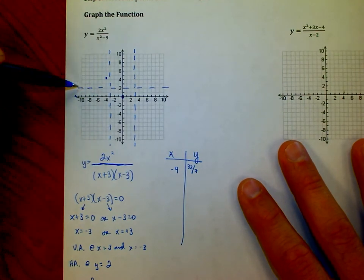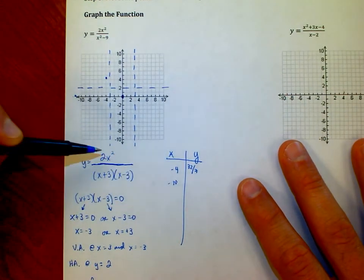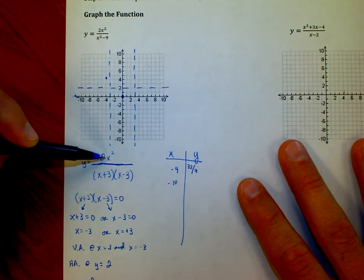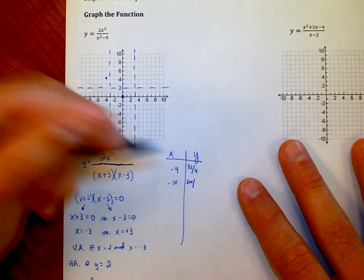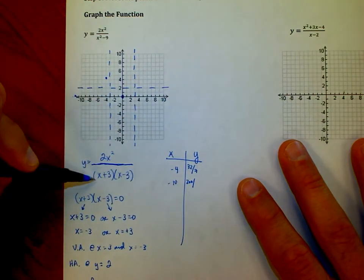If I put in negative 10, let's find out what that looks like. Negative 10 times x², that would be negative 10 times negative 10 is positive 100. Positive 100 times 2 is 200. So I'd have 200 over negative 10 plus 3 is negative 7.